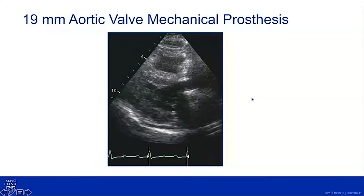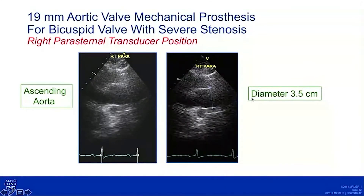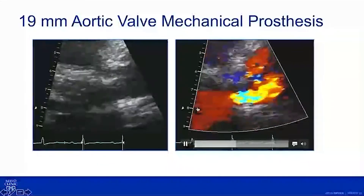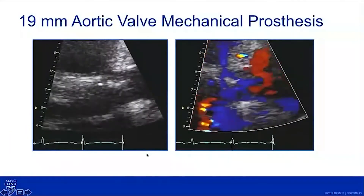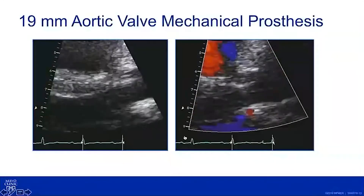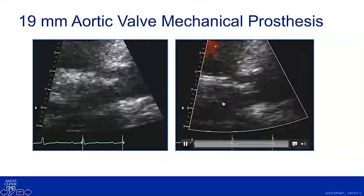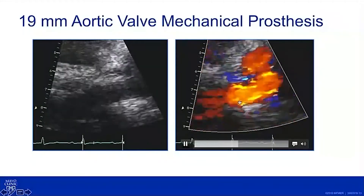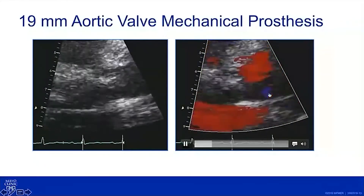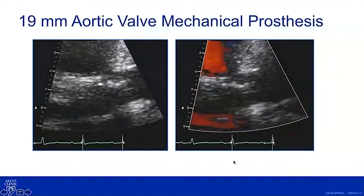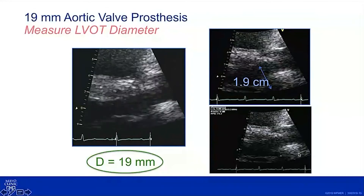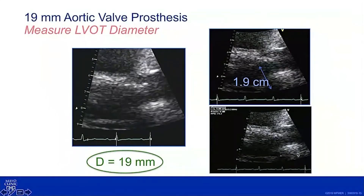Here is her pre-dismissal echocardiogram. She still has normal LV function and an aortic diameter of 3.5 cm. It's difficult to get images of the bileaflets, as is often the case with smaller prosthetic valves, but the color flow doesn't accelerate until the level of the prosthesis and then doesn't get turbulent — it's pretty laminar flow, which is reassuring. Same in short axis, with no AR; we couldn't even see the little normal leakage jets.